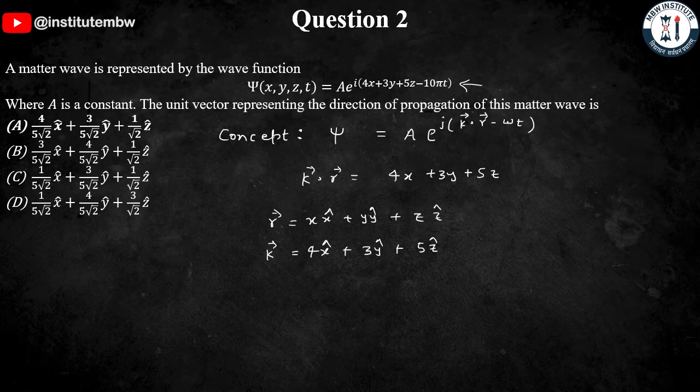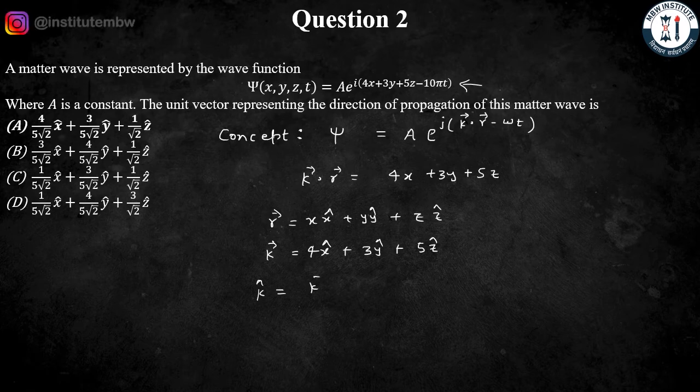For the unit vector, that is equal to k⃗ / |k⃗|. So, what is |k⃗|?